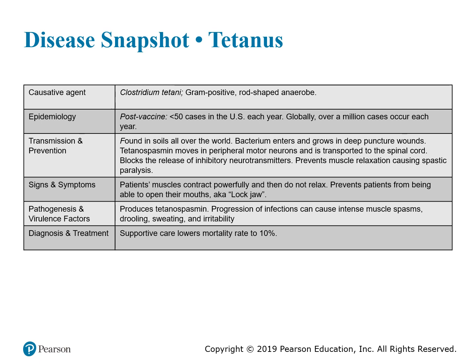Tetanus is caused by Clostridium tetani, a gram-positive, rod-shaped, anaerobic organism found in soil and water. It can enter the body through a puncture wound, travel to the peripheral nervous system, invade the neurons, and be transported to the spinal cord. It blocks the release of inhibitory neurotransmitters, preventing muscles from relaxing, causing spastic paralysis — what we know as tetanus. Tetanus vaccines are available to prevent this.